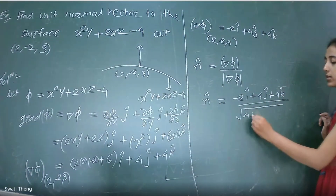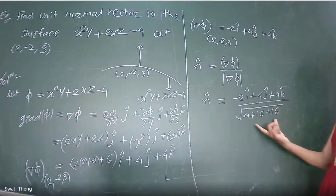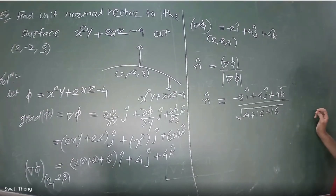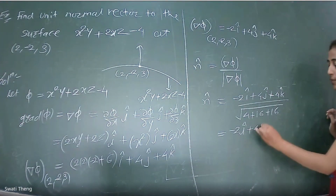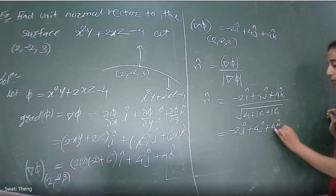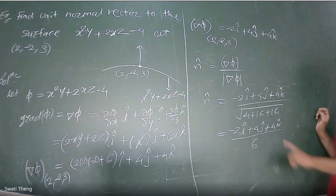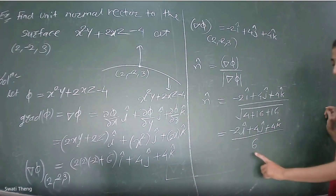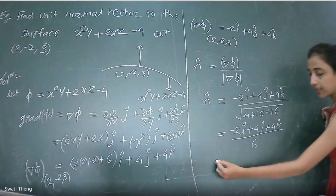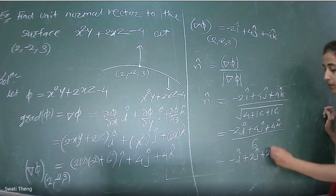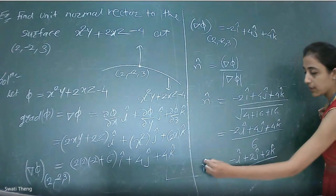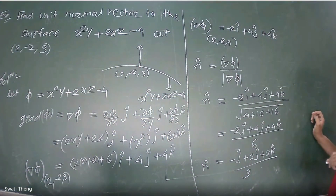Now the next task is to find the unit normal vector. Unit normal vector n̂ = ∇φ / |∇φ|. So n̂ = (-2 î + 4 ĵ + 4 k̂) / |(-2 î + 4 ĵ + 4 k̂)|. The magnitude is √(4 + 16 + 16) = √36 = 6. Therefore n̂ = (-2 î + 4 ĵ + 4 k̂) / 6. Taking 2 common in the numerator and cancelling with the denominator: n̂ = (-î + 2ĵ + 2k̂) / 3. This is the unit normal vector at point (2, -2, 3).